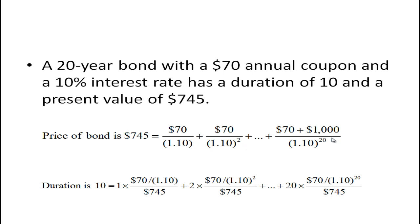You can work out the price of the bond through the standard bond pricing equation — the present value of all future cash flows. The duration is just a weighted average of the different terms to maturity for the cash flows, weighted by the percentage of the present value of the cash flow received in each period. So in the first period, (70 / 1.10) divided by the price of the bond, multiplied by one; in the second year, (70 / 1.10²) divided by the price of the bond, multiplied by two; and so on for the full 20 years — giving a duration of 10.